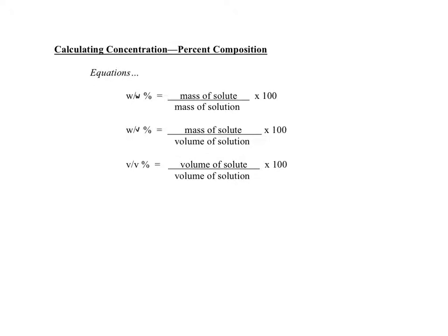When you look at the three formulas, you're going to see that the top is always the solute. Every single one of these - the top measurement is the measurement of the solute, and the bottom measurement is always the solution. With percentages, the general formula is always part over whole - you always have the piece over the entire whole.